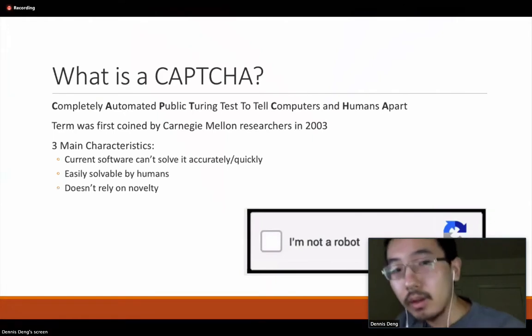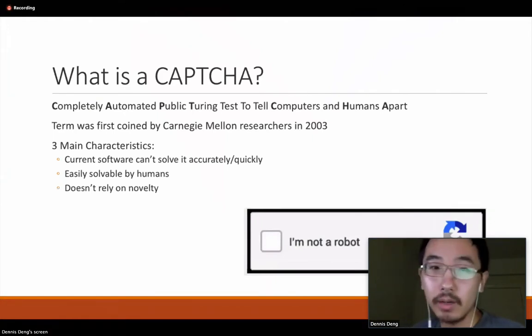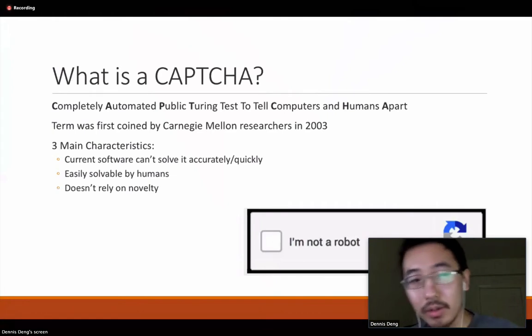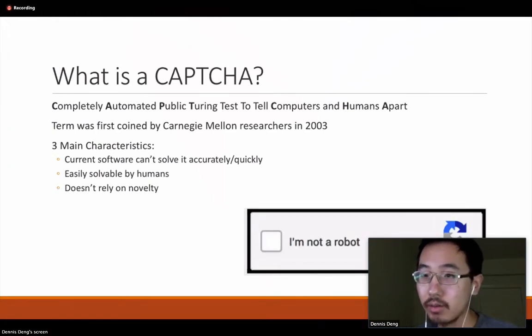So starting out, CAPTCHA actually stands for a completely automated public Turing test to tell computers and humans apart. I'm sure you could all have guessed that, but this is actually an acronym. They apparently came up with the word first, and then decided to fill it in with this incredible acronym. This term was actually first coined by Carnegie Mellon researchers in 2003, in a research paper that overviewed how CAPTCHAs work and the applications of CAPTCHAs.